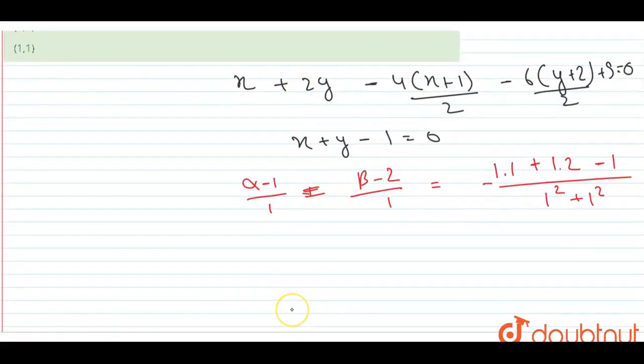I will get the value of alpha and beta. Alpha equals minus 1, so alpha equals 0.